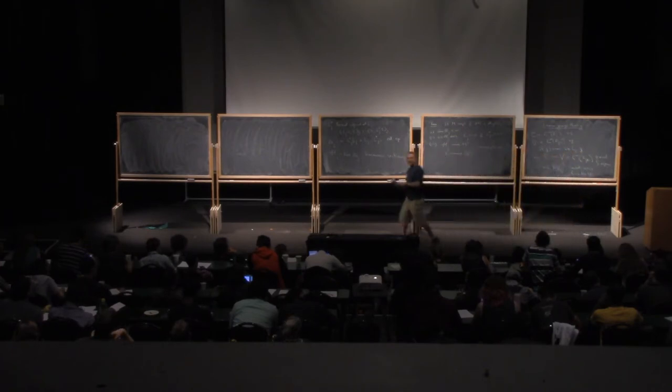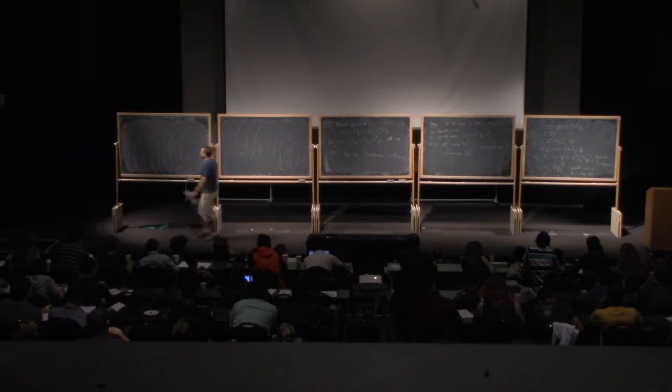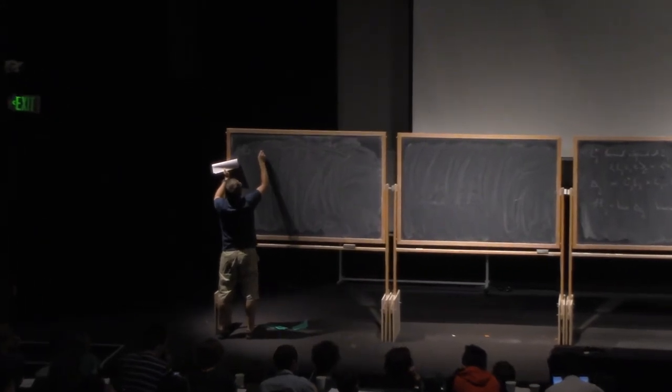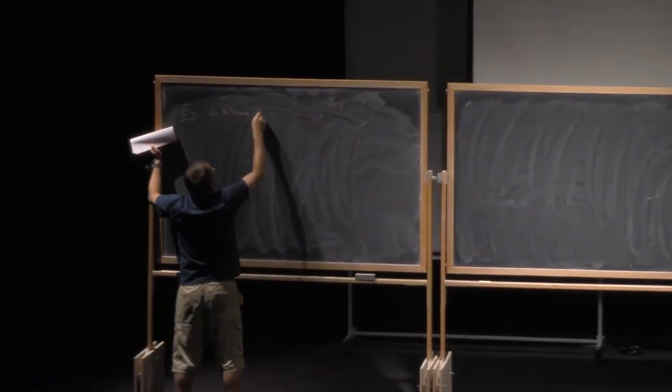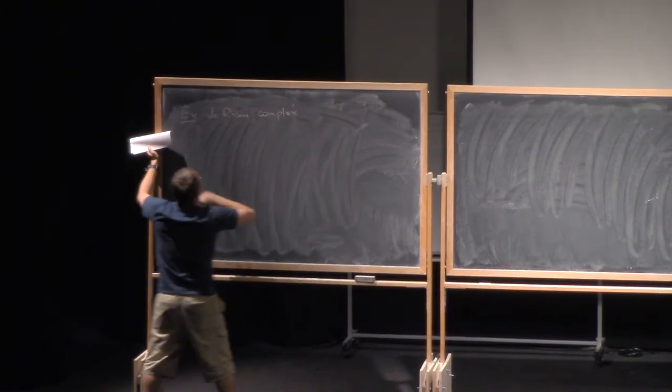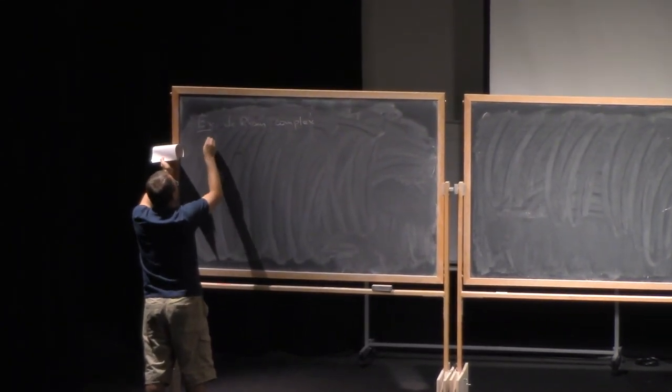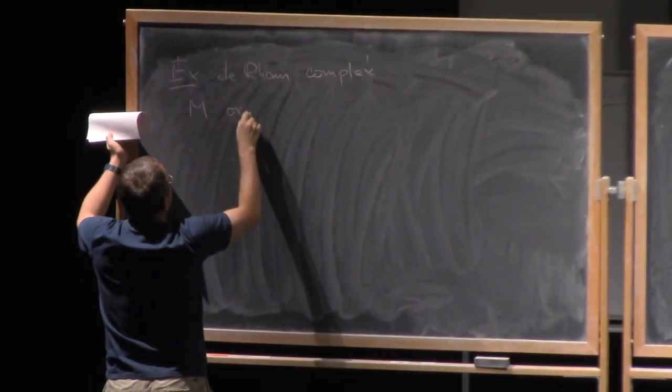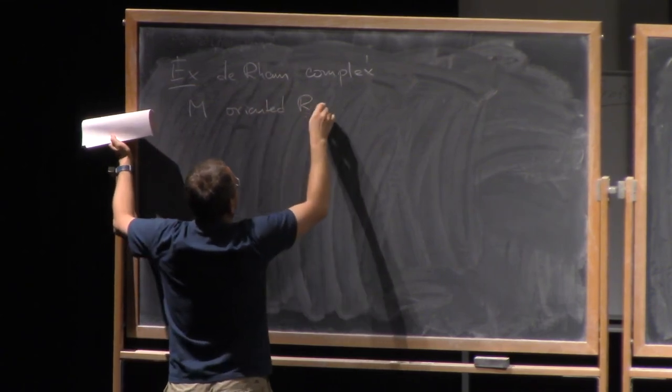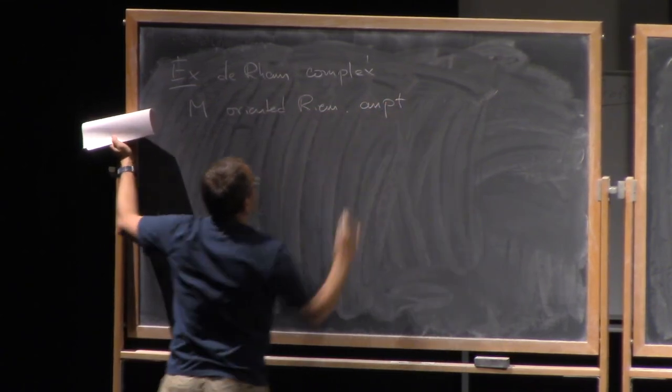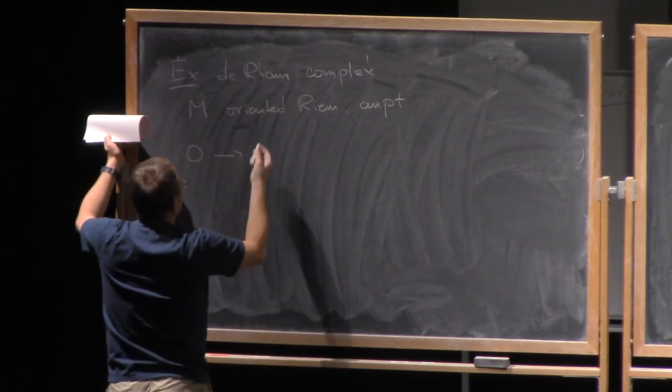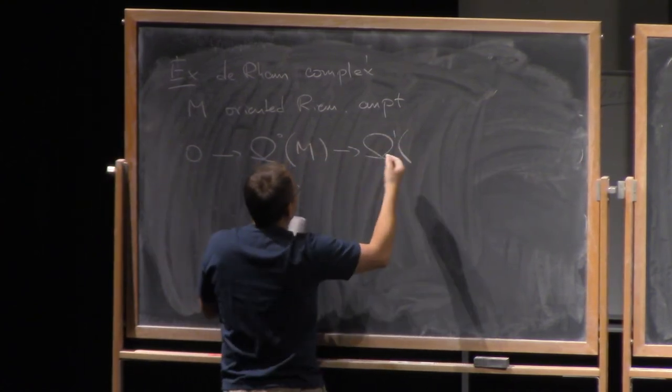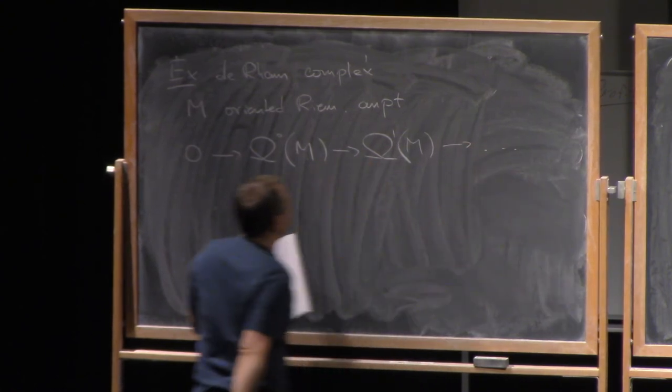And so I could define Bj to be the dimension of Hj. So let me consider one, perhaps, more concrete example, where we take the de Rham complex. So here is an example. So what we have, we have a manifold, say a compact manifold oriented. So oriented, Riemannian, compact, and we have the de Rham complex that is omega 0, M, and omega 1, M, and so on.